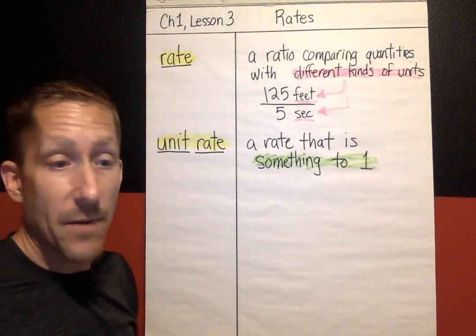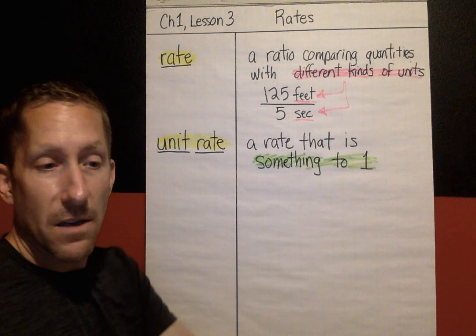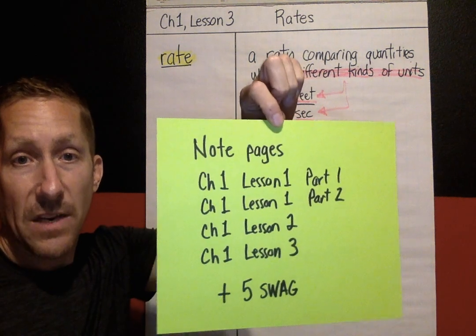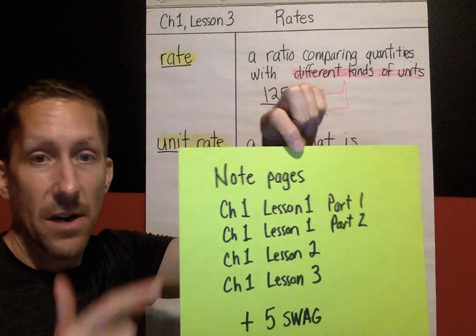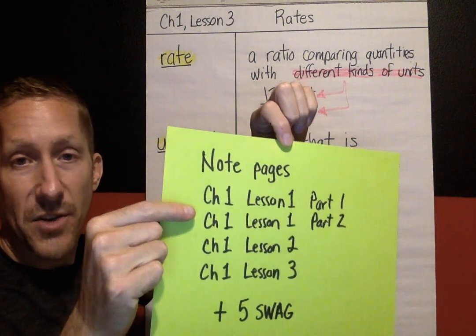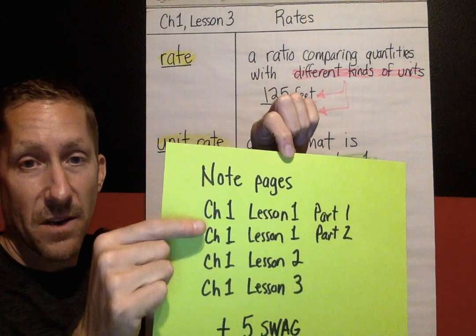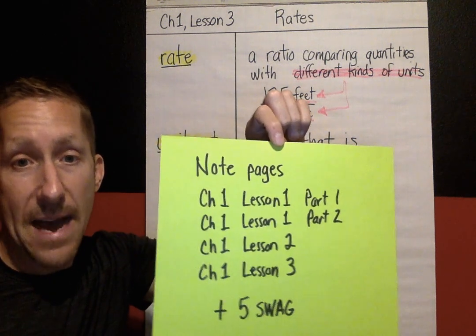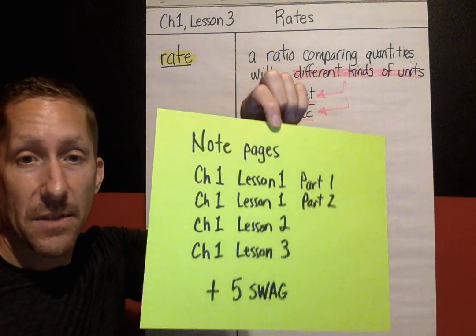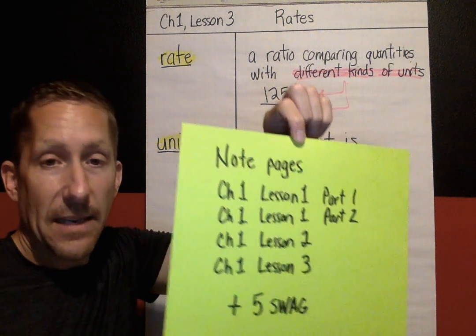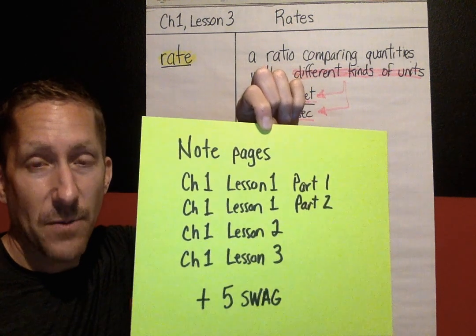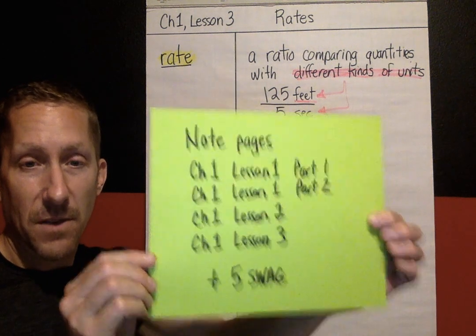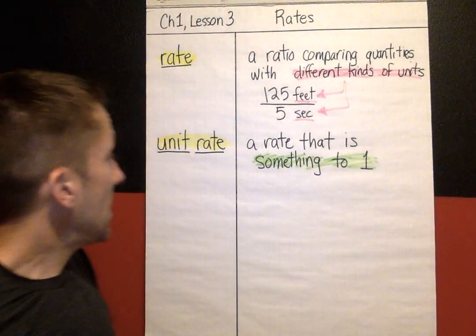Before we talk about how to find unit rates, hidden treasure time! If you're watching this, this is a special hidden treasure. You need to have all note pages for the entire chapter — Chapter 1 Lesson 1 Part 1, Chapter 1 Lesson 1 Part 2, Chapter 1 Lesson 2, and Chapter 1 Lesson 3, which is what we're doing right now. If you have all four and five swag tickets, when I call names or draw sticks, you're going to get something out of the treasure box.